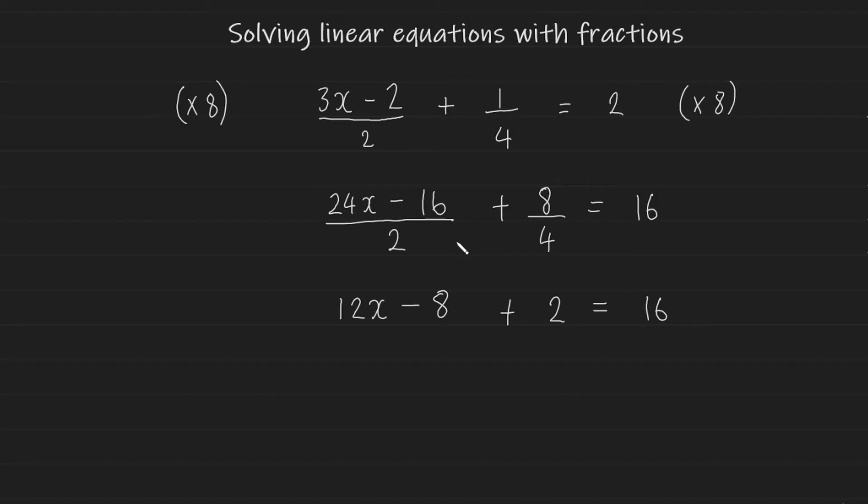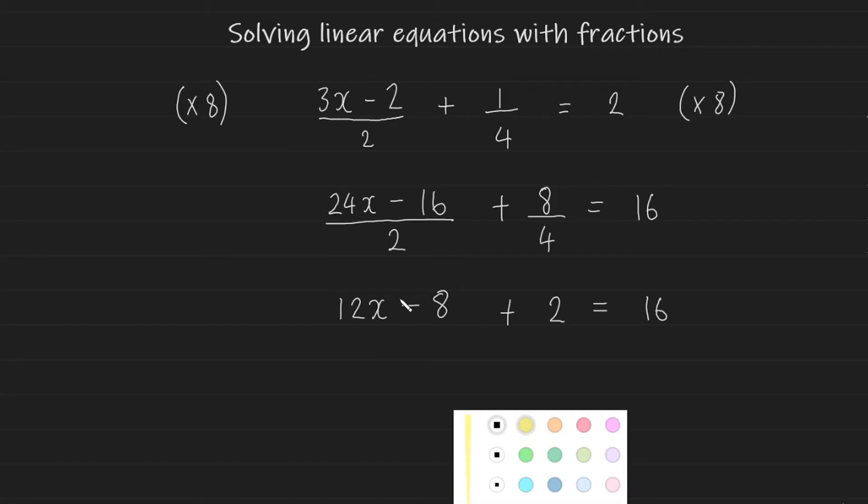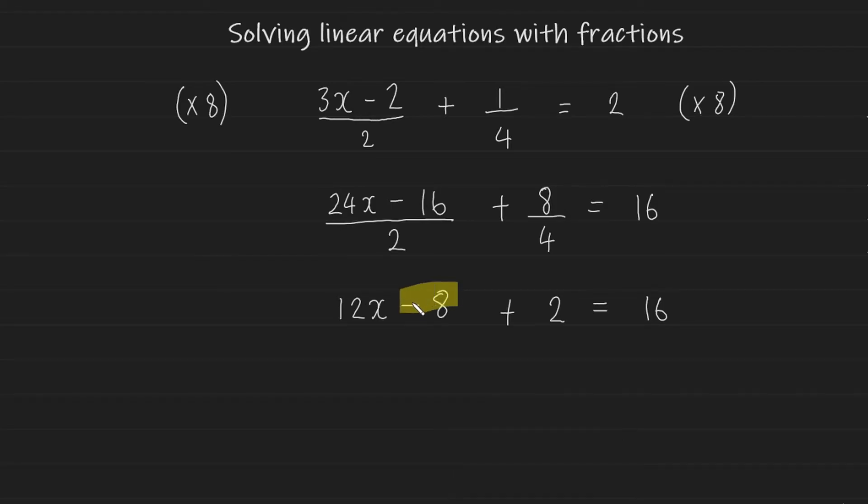So now let us simplify this equation here by collecting like terms. There's only one term with an x. However, there are two terms that are numbers. So we can combine them together to get the following. 12x minus 8 plus 2 is minus 6 equals 16. And now this becomes a two-step linear equation. So we're going to add 6 to both sides. And this should give us 12x equals 22.